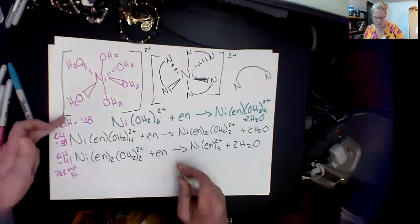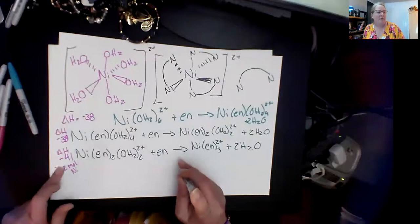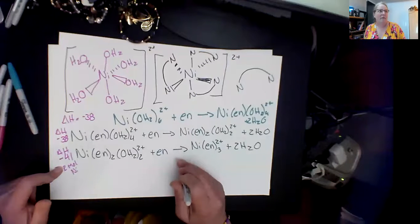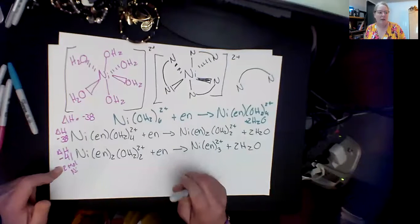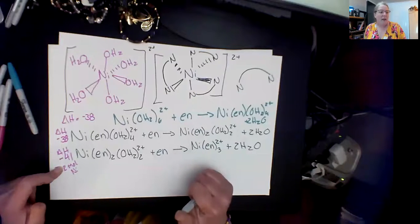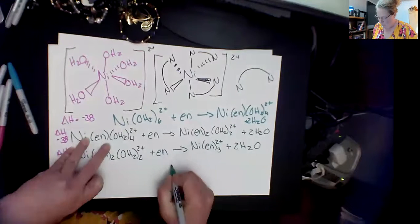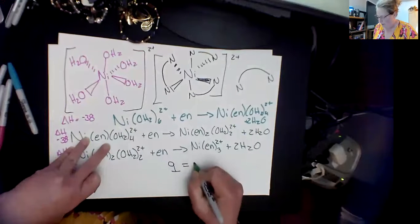From last week we had these values here, we're dealing with Delta H with Hess's law and bond breaking and formation. This week we're going to use the equation for Q is MC Delta T.